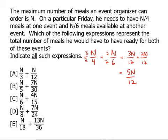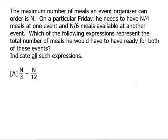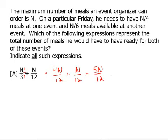We want to know which of the answer choices equals 5n over 12. Let's look at them one at a time. Choice A: we have denominators of 3 and 12. The least common denominator is 12, so we multiply the first fraction by 4 over 4. We get 4n over 12 plus n over 12, which equals 5n over 12. So this one works — A is one of the answers.